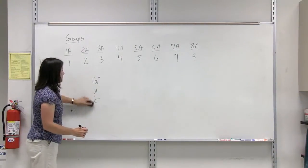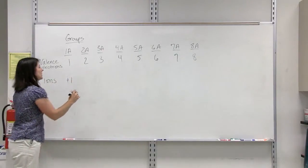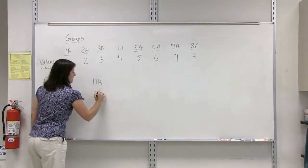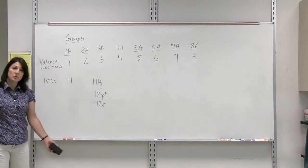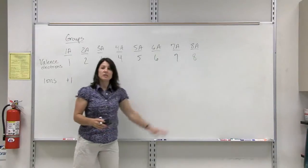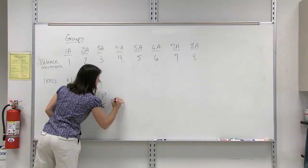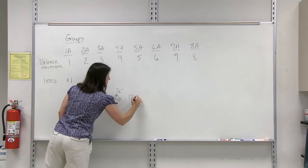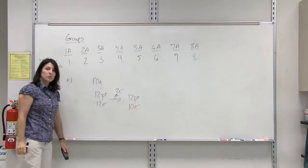Group 2A is going to do something very similar. So it's plus 1 for 1A. Group 2A, if we look at magnesium as an example, 12 protons, 12 electrons, it's neutral. It wants to look like a noble gas. It's going to lose its two valence electrons. Two electrons leave. We still have 12 protons.